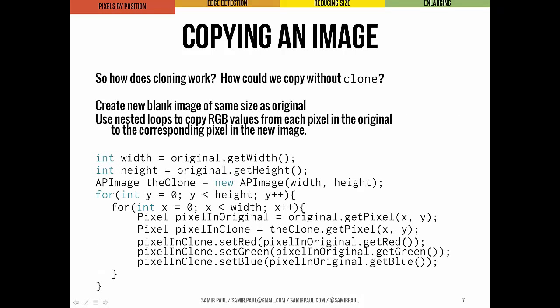How does the clone method actually work? We could write a Java code segment that shows how to do this without clone. Essentially, the algorithm creates a new blank image of the same dimensions as the original. Then it uses a nested loop structure to copy the RGB values from each pixel in the original image to the corresponding pixel in the new image. We start with the width, get the height, and create a new image called theClone with the same width and height as the original.